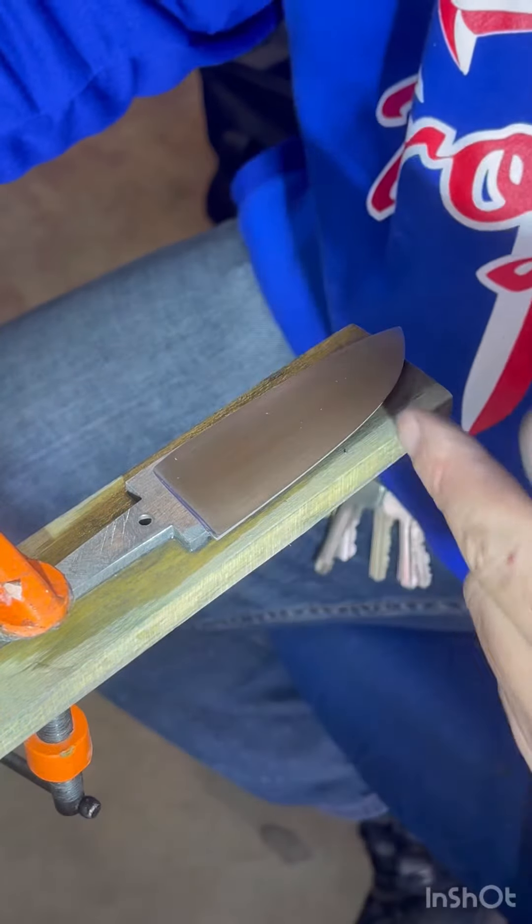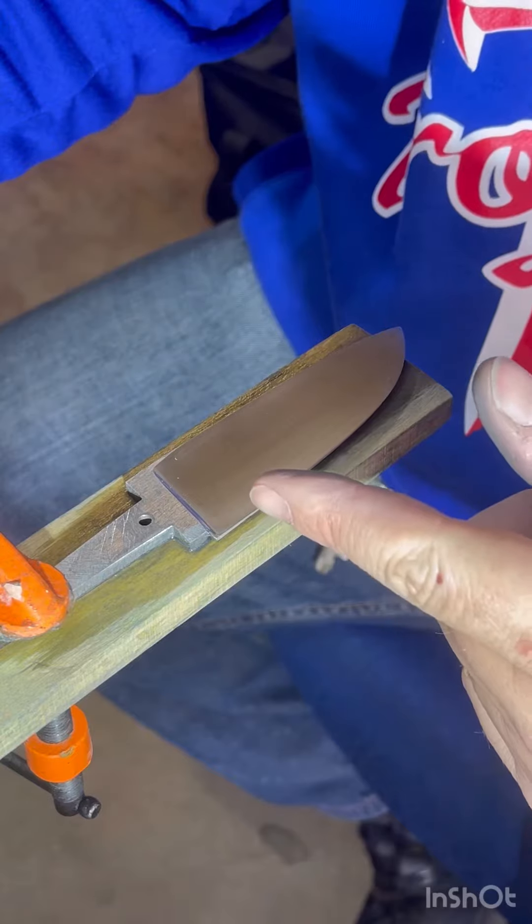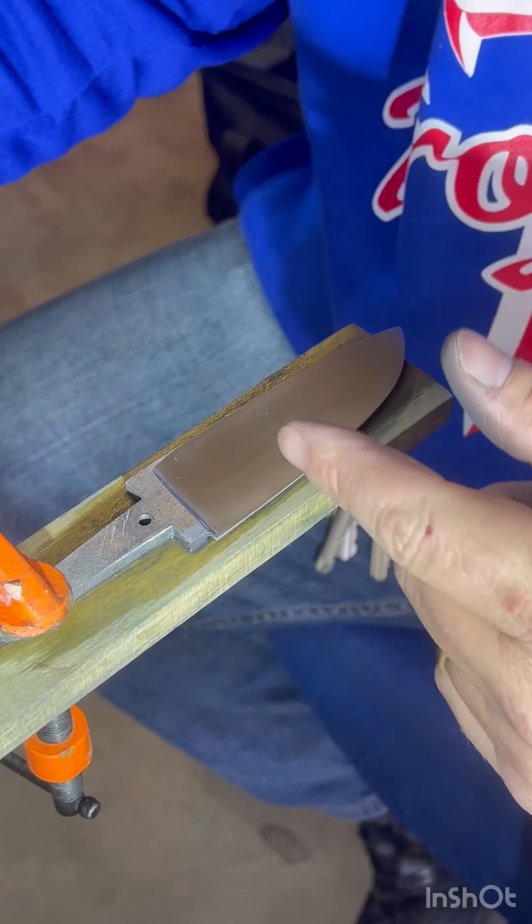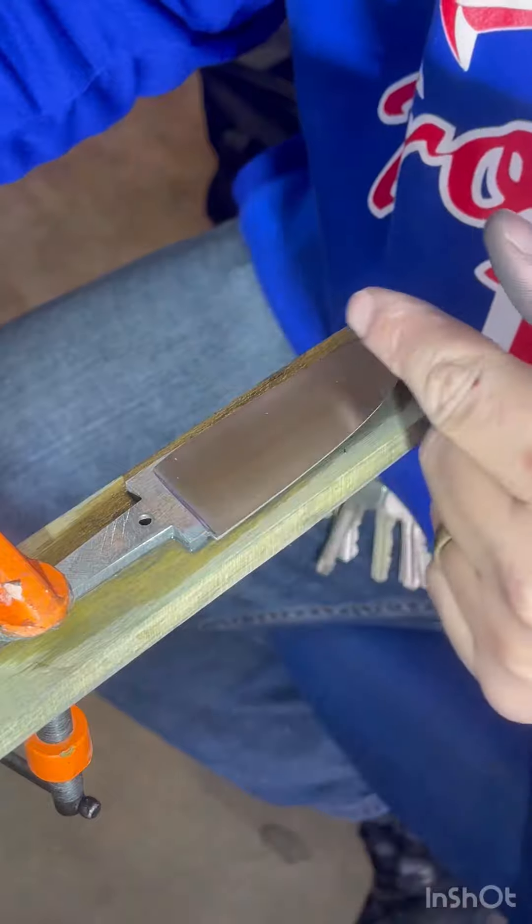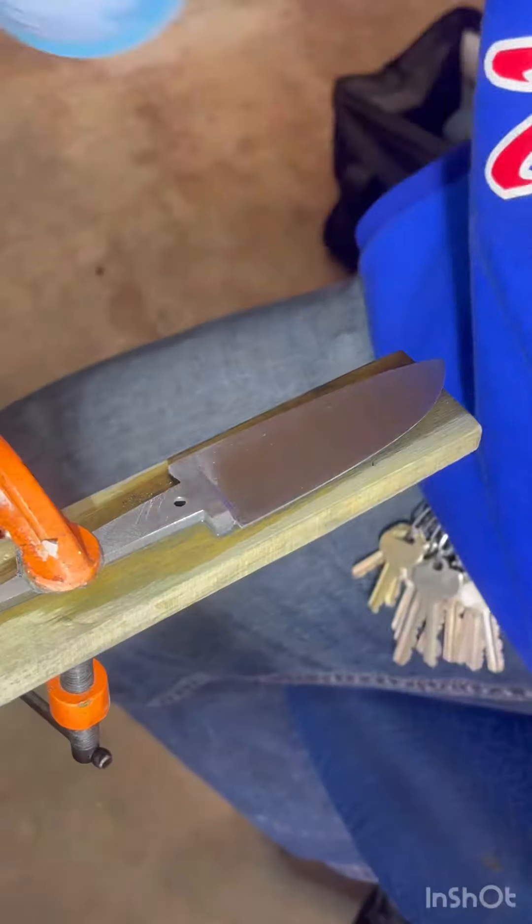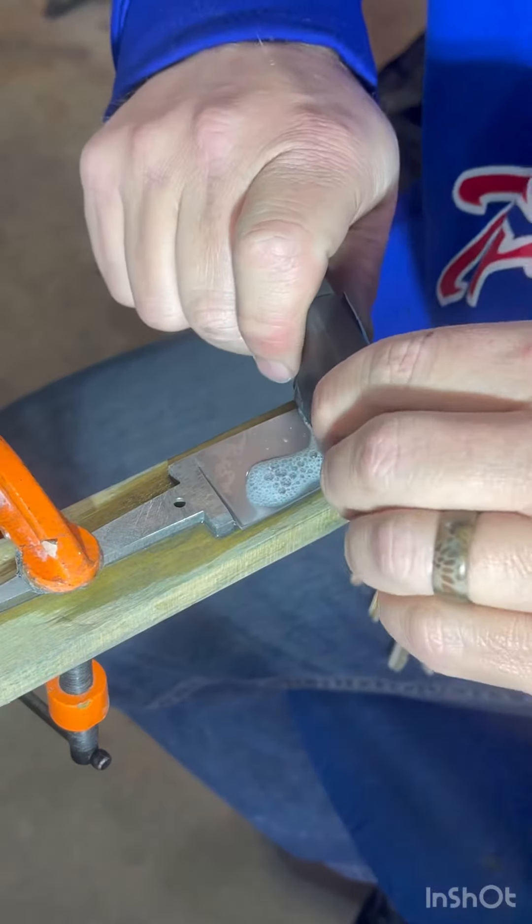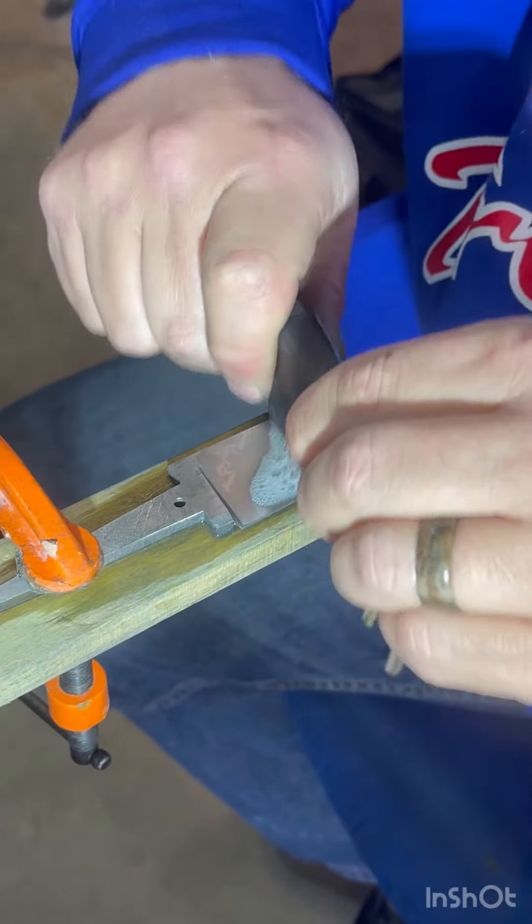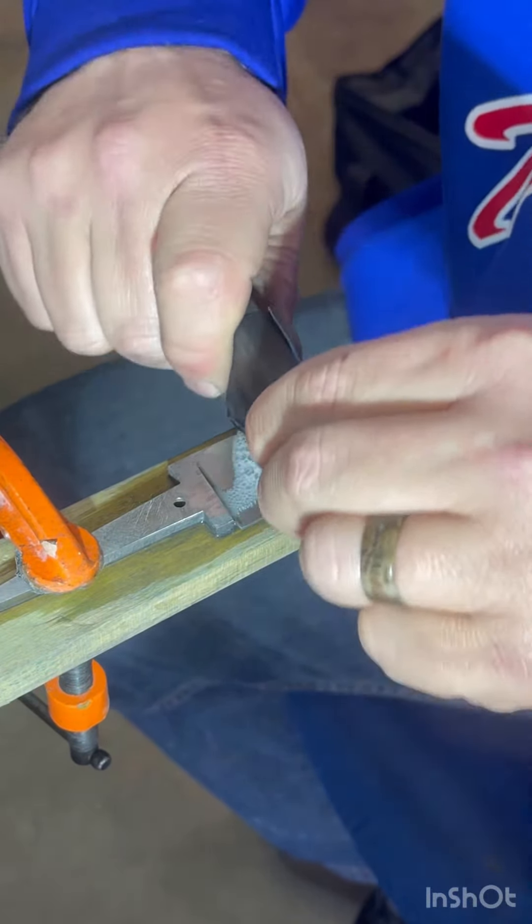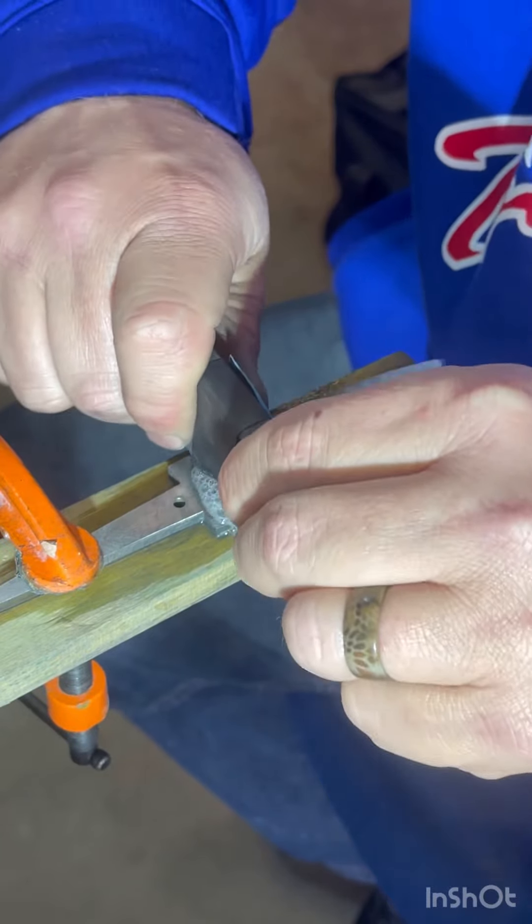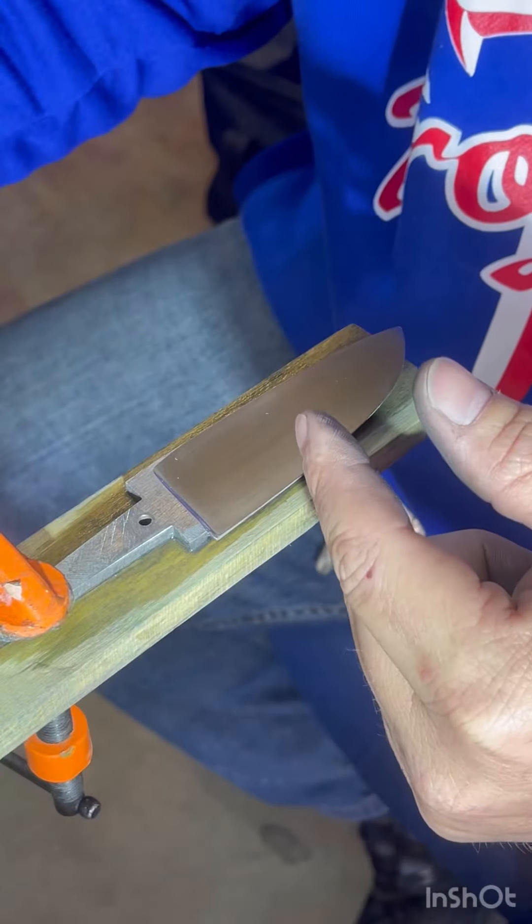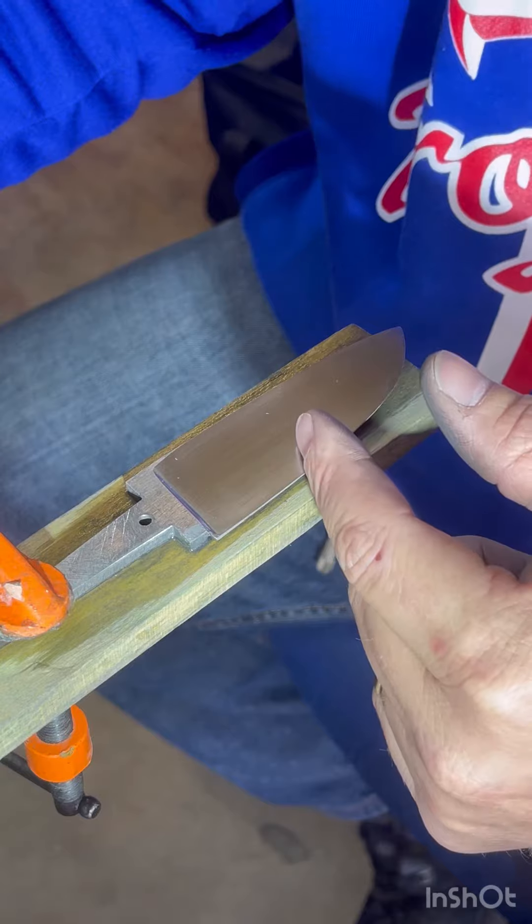So every time I transition to a different paper, to a higher grit paper, I do a back and forth and a diagonal. That way I'm making sure I get all the scratches from the previous grit.